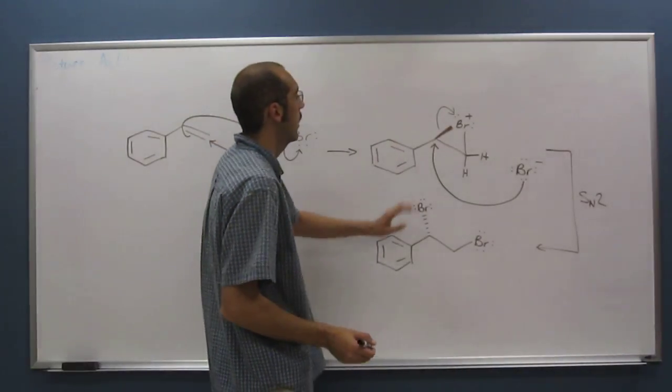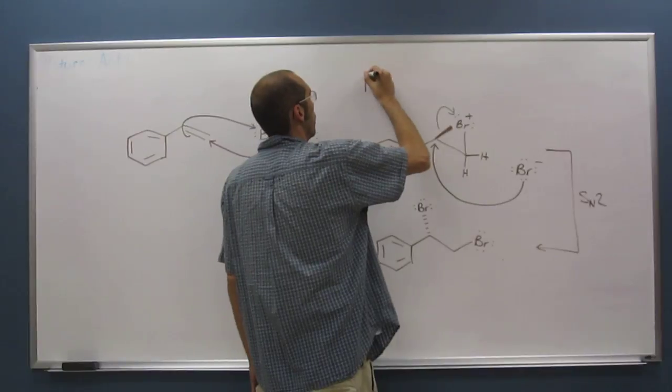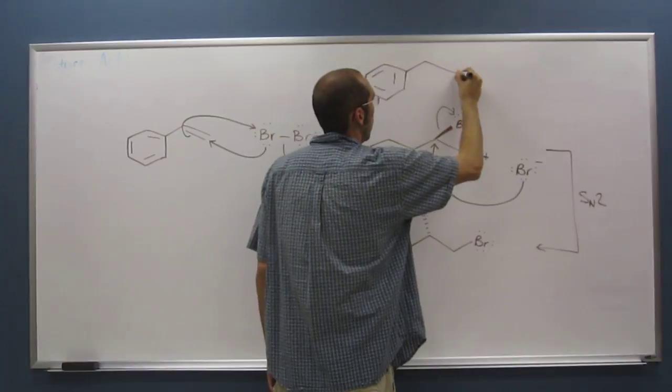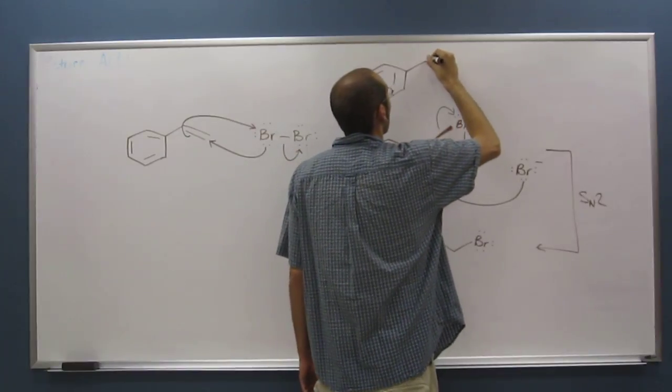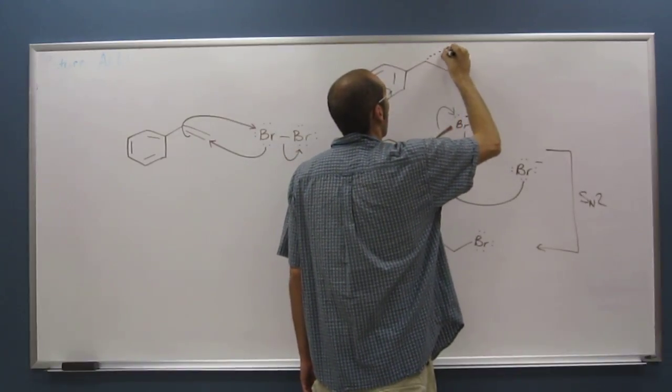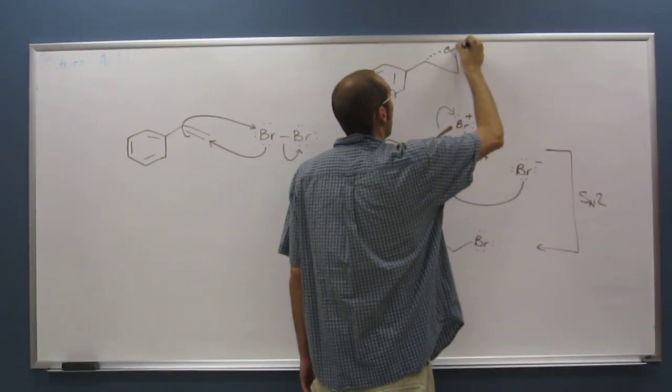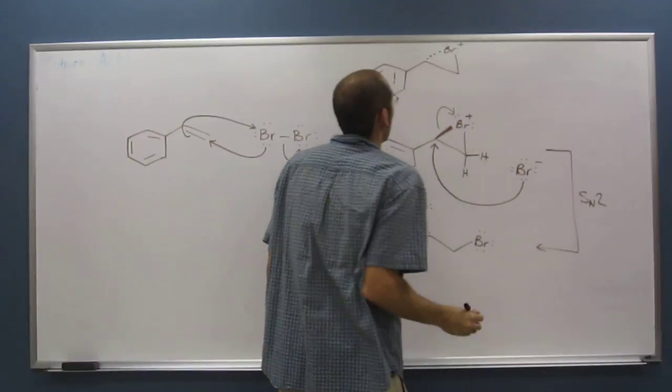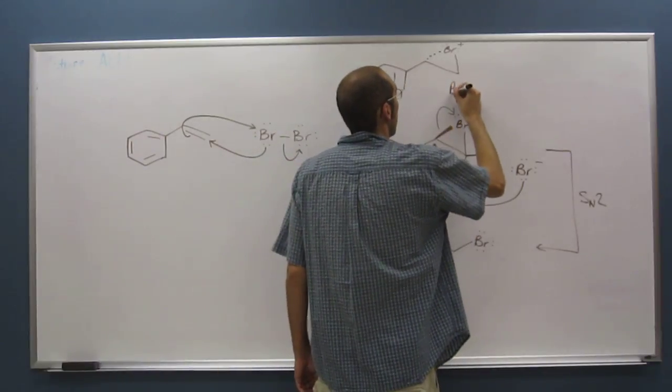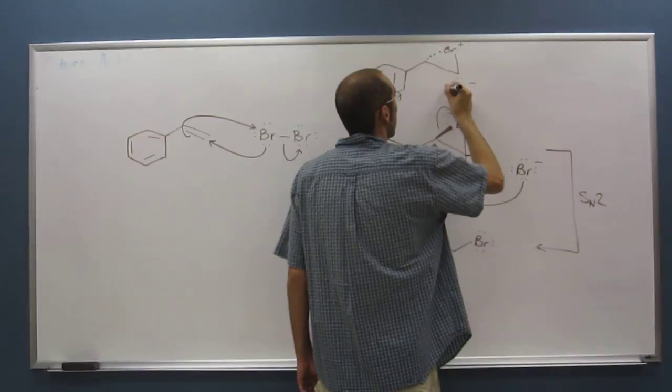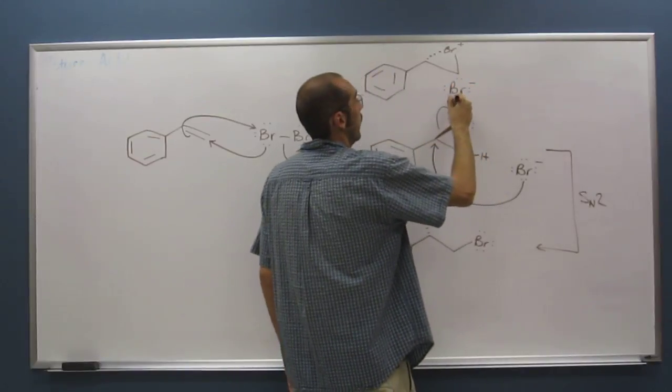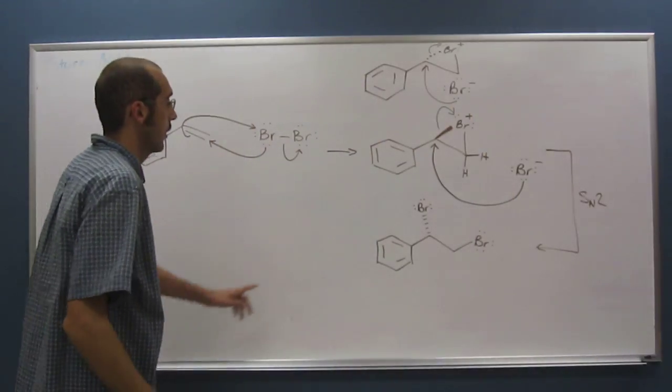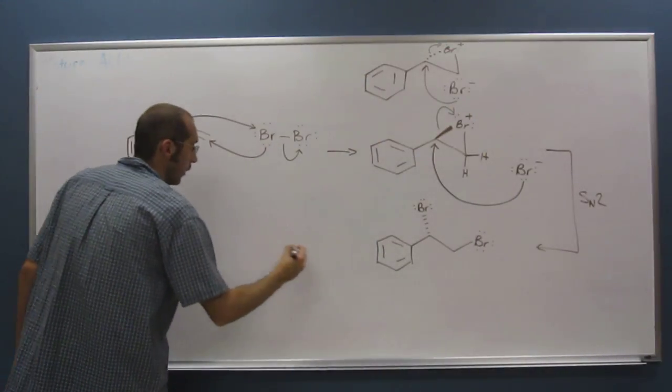So again, here, you would actually make both of the enantiomers of this intermediate. So of course, when you have the Br minus here and it attacked like that, you would get the enantiomer here of this guy.